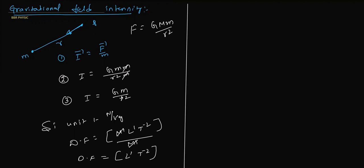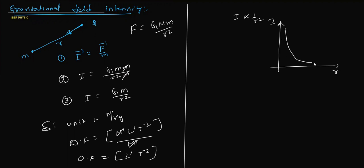Intensity is inversely proportional to R². If you plot intensity versus R, you get a rectangular hyperbola — a steeper parabola shape. Since I ∝ 1/R², the graph shows intensity decreasing with distance.